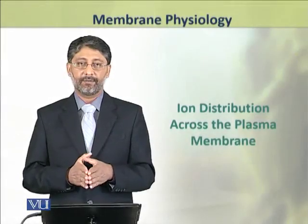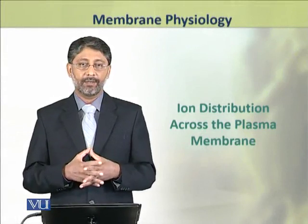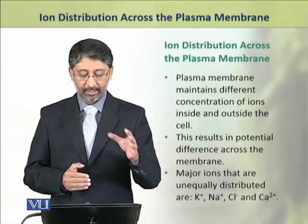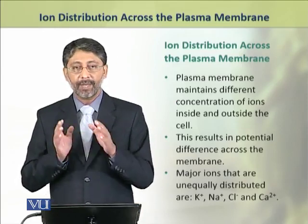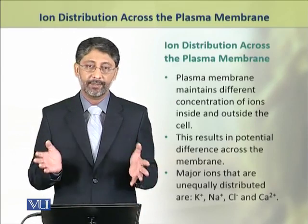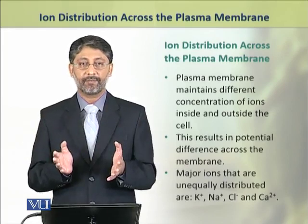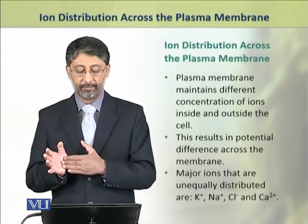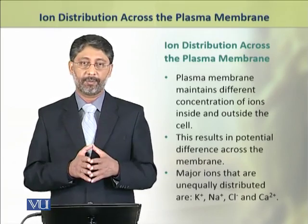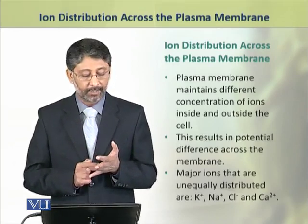Dear students, in this module we shall discuss the unequal distribution of ions across the plasma membrane. The plasma membrane maintains different concentrations of ions inside and outside the cell, resulting in a potential difference across the membrane. The major ions that are unequally distributed across the membrane include sodium, potassium, calcium, and chloride ions.